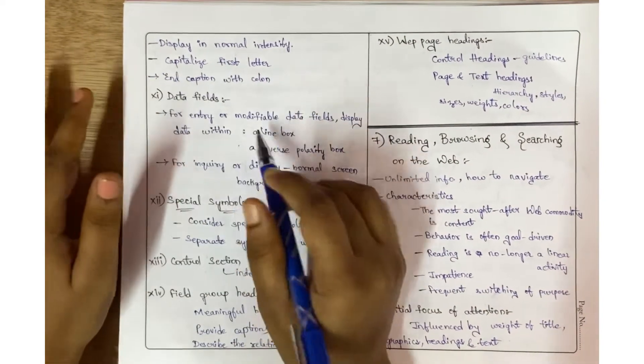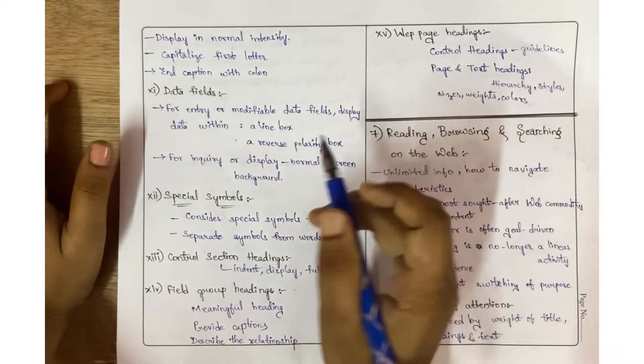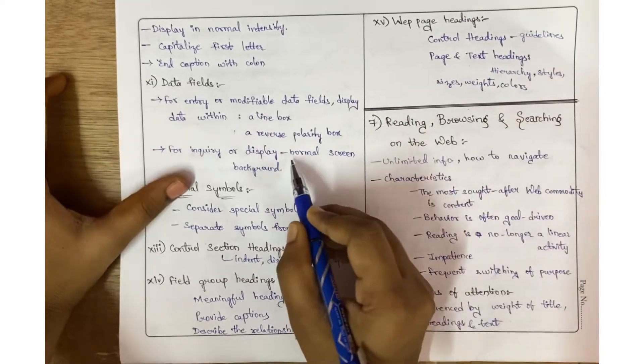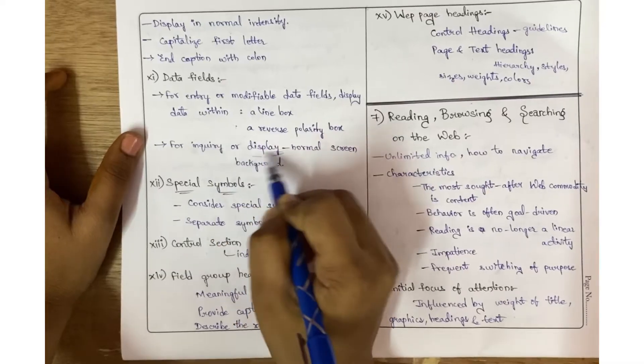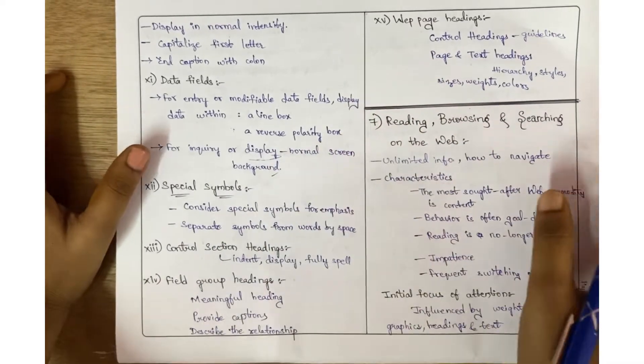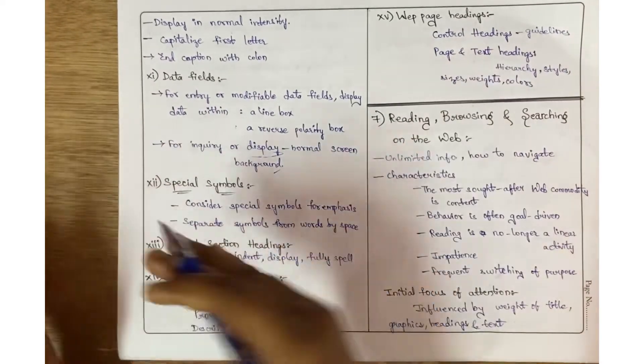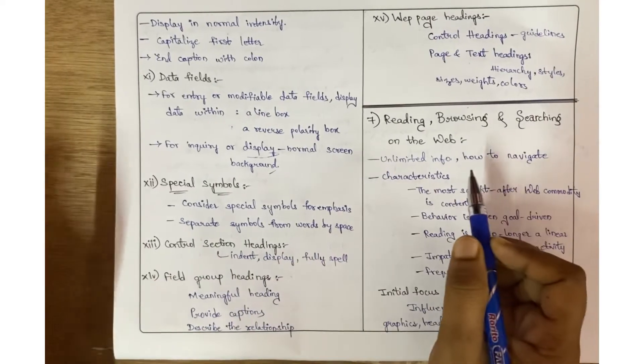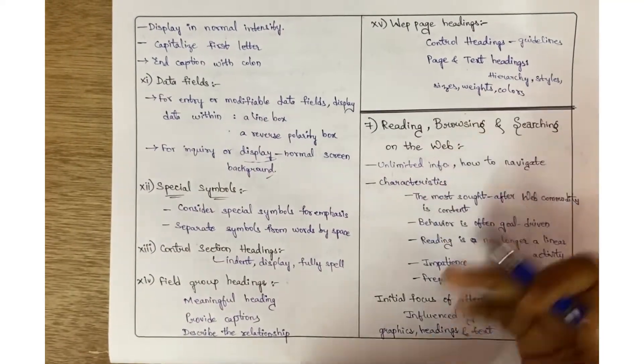We use capitalization for first letters and captions with colons. Data fields: whatever entry boxes are there, they must be modifiable. Use normal screen background for inquiry or display. Special symbols: consider special symbols for emphasis and separate those symbols from normal words. Control section headings must be properly indented, properly displayed, and fully spelled.